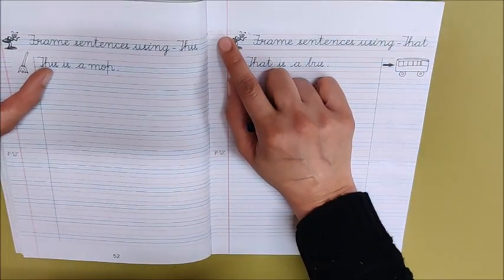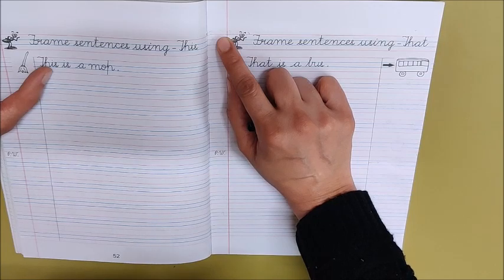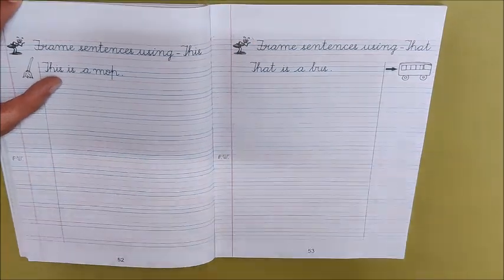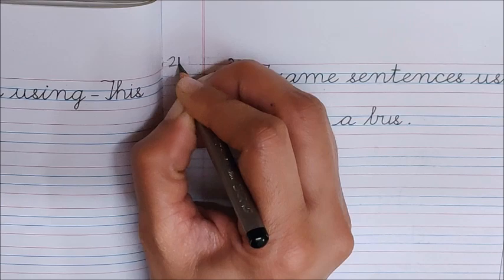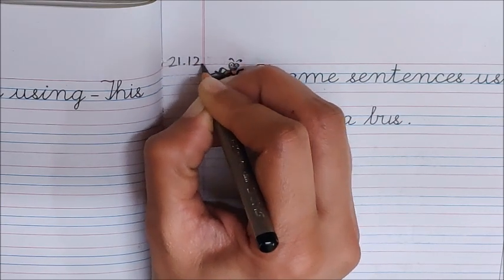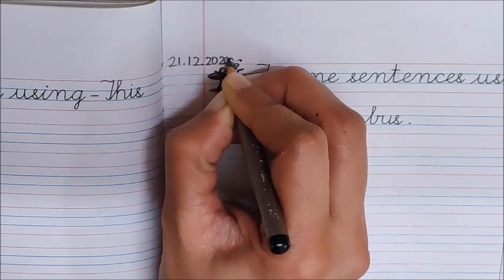Now write down here today's date. Today is December 21. 21 dot, 12 dot, 20, 20.